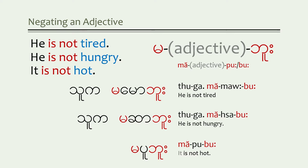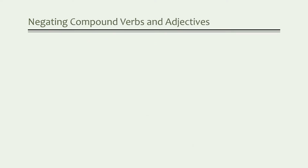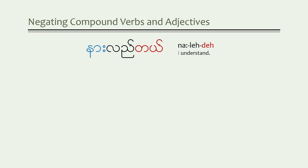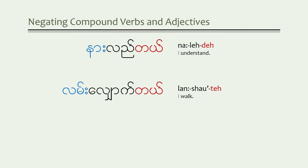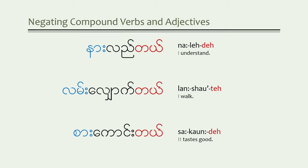Hopefully this seems pretty straightforward. Let me add a level of difficulty. In the first examples, I selected simple one-syllable verbs and adjectives. But now I've chosen some compound verbs and adjectives. For instance, 'to understand' is na-le-dee; 'to walk' is lan-shout-dee; and 'to taste good' is sa-conde-dee. Compound verbs — and sometimes adjectives — are formed by combining a varied mix of nouns, verbs, or adjectives. The individual syllables are identified with blue and black color, and the red marks the particles for positive or negative statements.